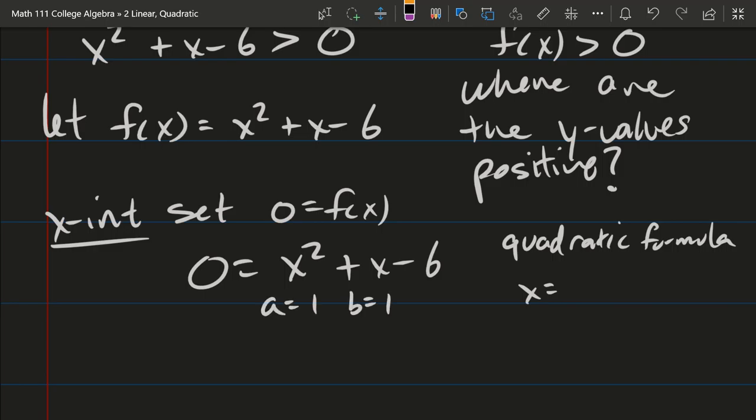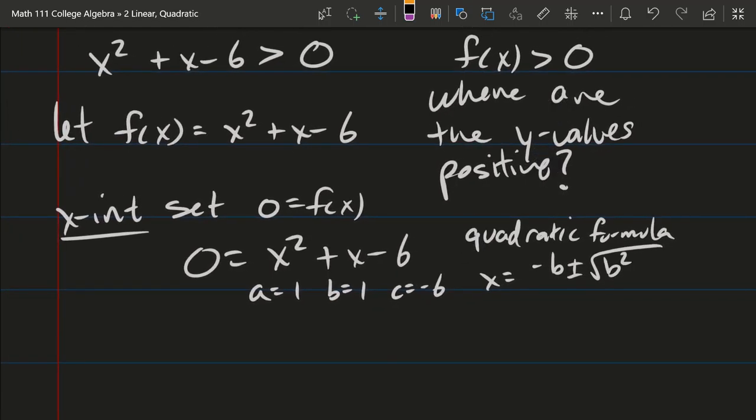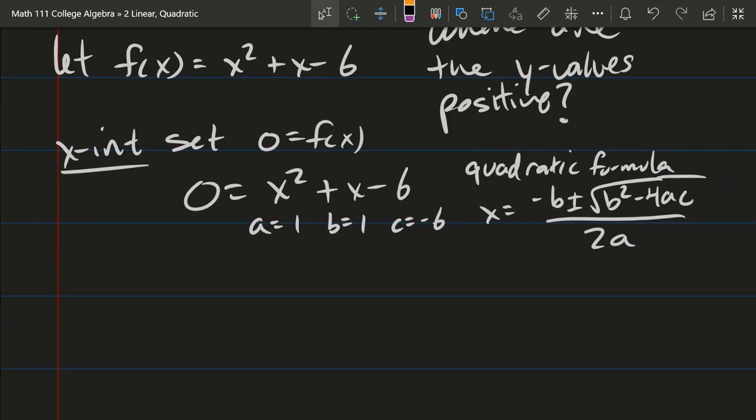There are three ways to solve for x. You can go quadratic formula, which is x equals negative b plus or minus square root b squared minus 4ac all over 2a, where a is 1, b is 1, c is negative 6. This came from the coefficients right above: x squared coefficient is 1, x coefficient is 1, the constant coefficient is negative 6.